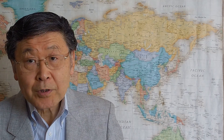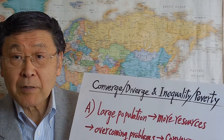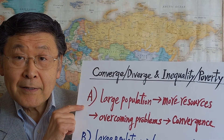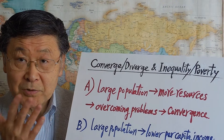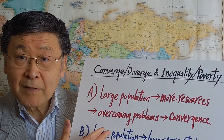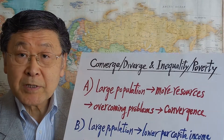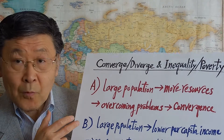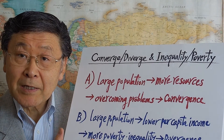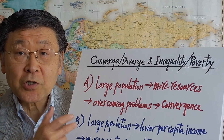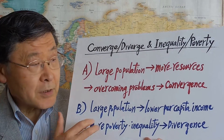This controversy will be repeated in other population-related issues — for example, the issues of convergence versus divergence in the world economy, and inequality and poverty. Side A says large population is a good thing because it provides more human resources and young people to help the economy overcome difficulties such as the middle income trap and push toward convergence. Side B says large population means lower per capita income — because the denominator is large — leading to more poverty, more inequality, and divergence in the global economy.